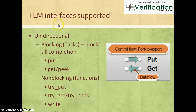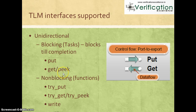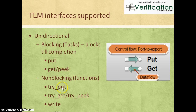Finally, some TLM interfaces supported by OVM and UVM: on the unidirectional side there are blocking and non-blocking interfaces. Blocking tasks block until completion happens — put and get are prime examples. Non-blocking interfaces provide try_ versions of the same calls. We'll learn more about these in a later lecture.